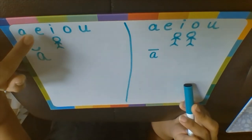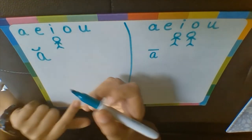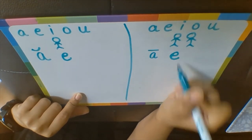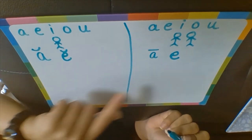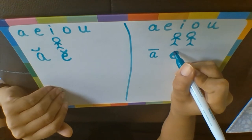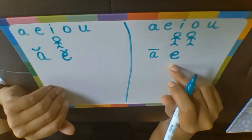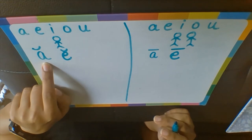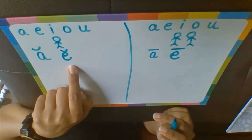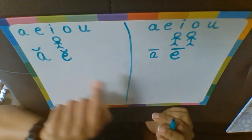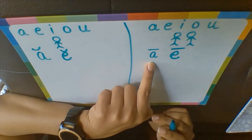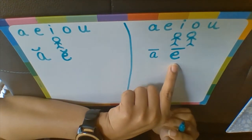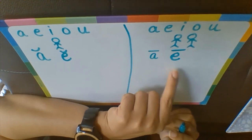Moving on to the next vowel: E. Short E, when you're alone, says /ɛ/. Long E is excited and reads its own alphabet: E. Short E reads the phonic sound /ɛ/, and long E reads the alphabet sound E.